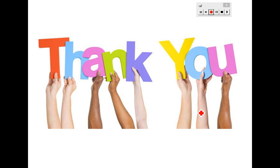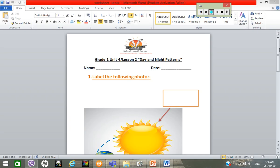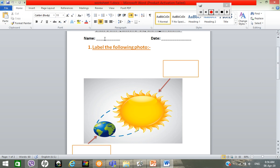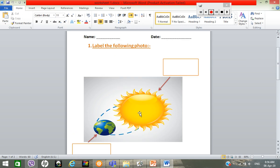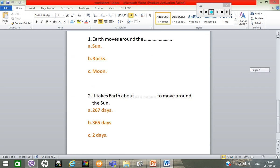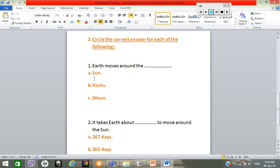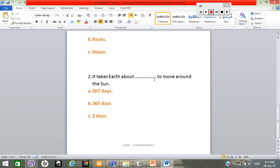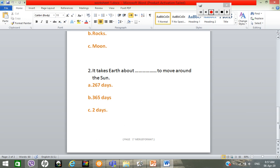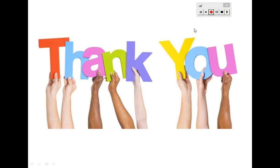Thank you all for today. Here is your worksheet to solve. Please do not forget to write your name first. You will label the two objects, then answer these questions: Earth moves around the — choices are Sun, rocks, or Moon. Number two: it takes Earth about how long to move around the Sun — a) 267 days, b) 365 days, or c) two days. Please solve your classwork and send it back to me. Thank you all for listening — see you next time, bye bye!